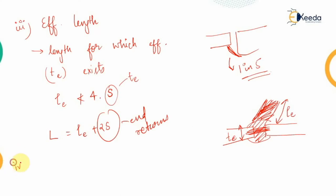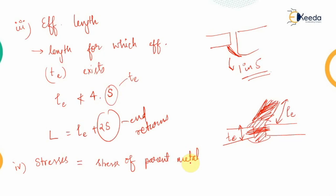For stresses in butt welds, the stresses are taken as equal to the stresses of the parent metal — the metal used for the connection determines the strength value. This applies when welding is done in a workshop. If welding is done in the field, these values are reduced by 20%, meaning we take 80% of the workshop value.